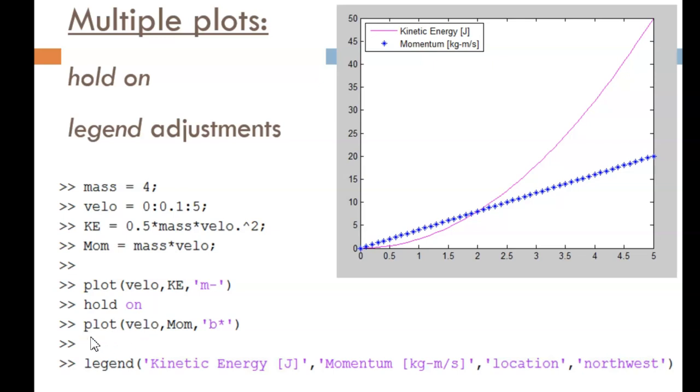So, here I plot the second curve, which is mom versus velo, as blue asterisks with no line connecting them. Any time we have multiple curves on one figure, we should use a legend. So, I add that here.